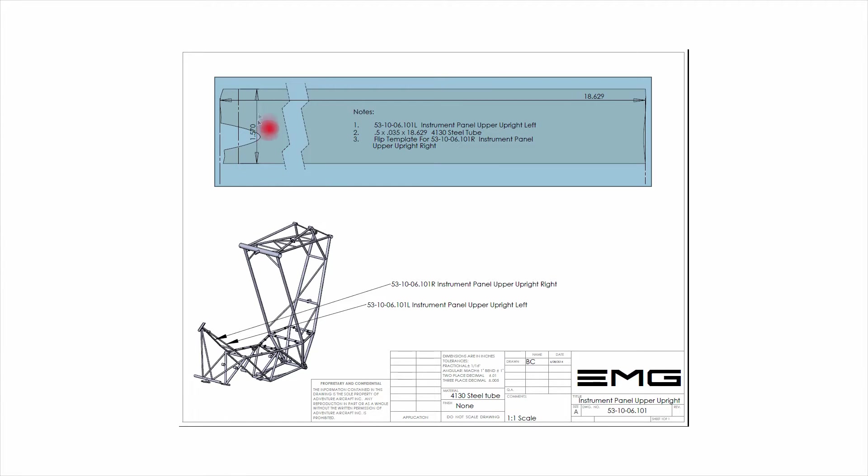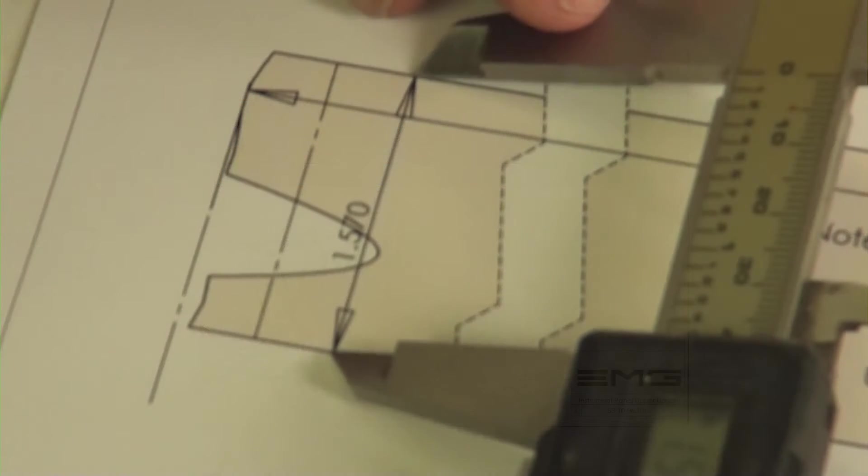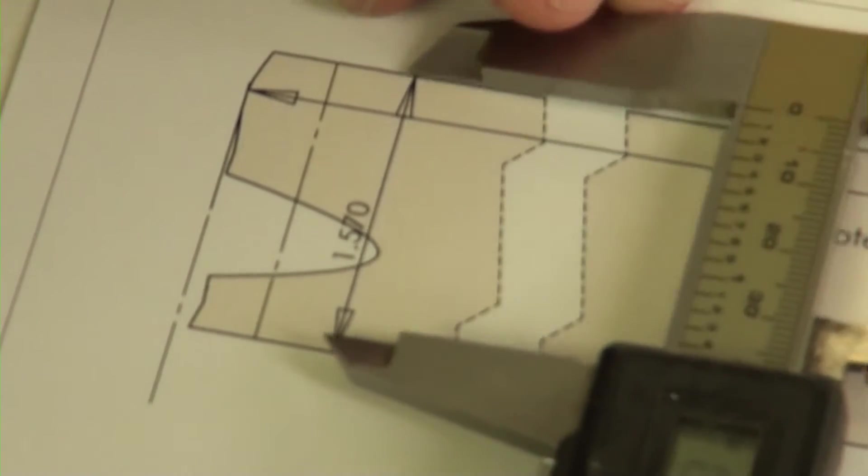There are dimensions on each one of the templates so that you can actually take that dimension with a caliper from point to point and that should come out with the dimensions that are on each template. Once you've done this a couple of times and you've verified that your printer is printing accurately you won't have to worry about that anymore.